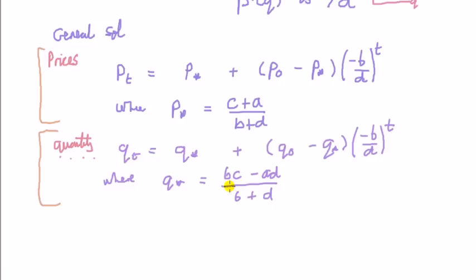Does this cobweb model always reach an equilibrium? If it does, we say that we have a stable solution, or the market equilibrium is stable. Otherwise, market equilibrium is not stable. In other words, if we start off at a point which is not equilibrium, the cobweb model may not get us to the equilibrium. So what must happen is we want pt to eventually reach p star over time.